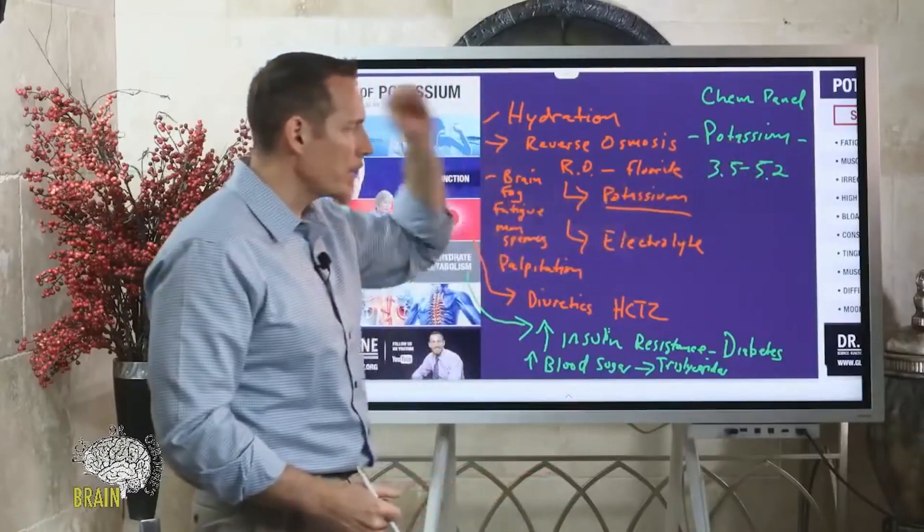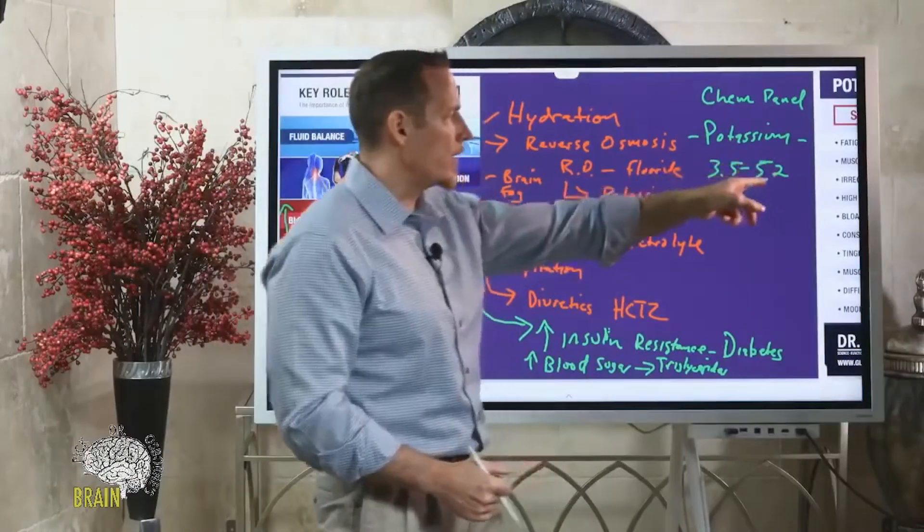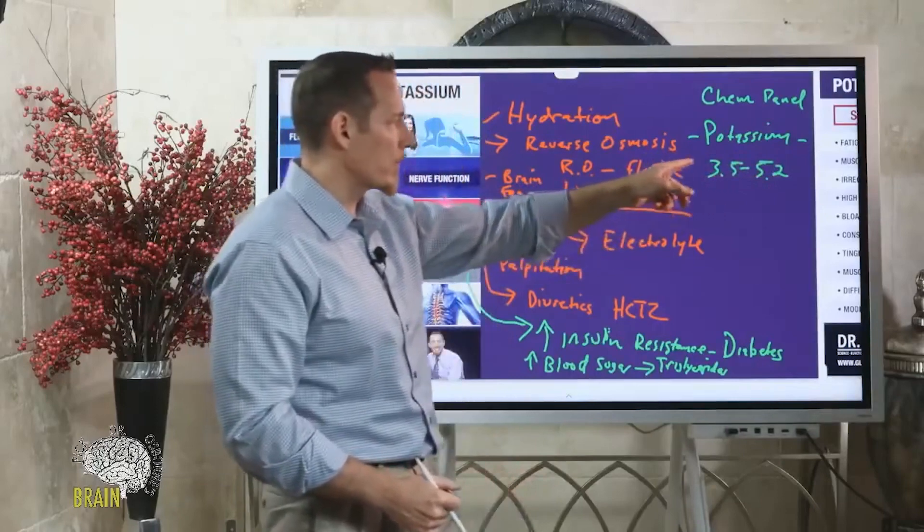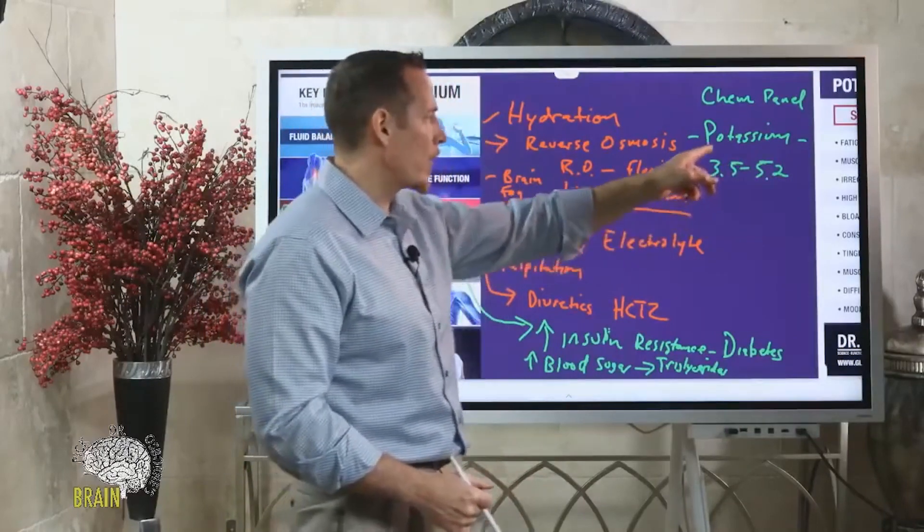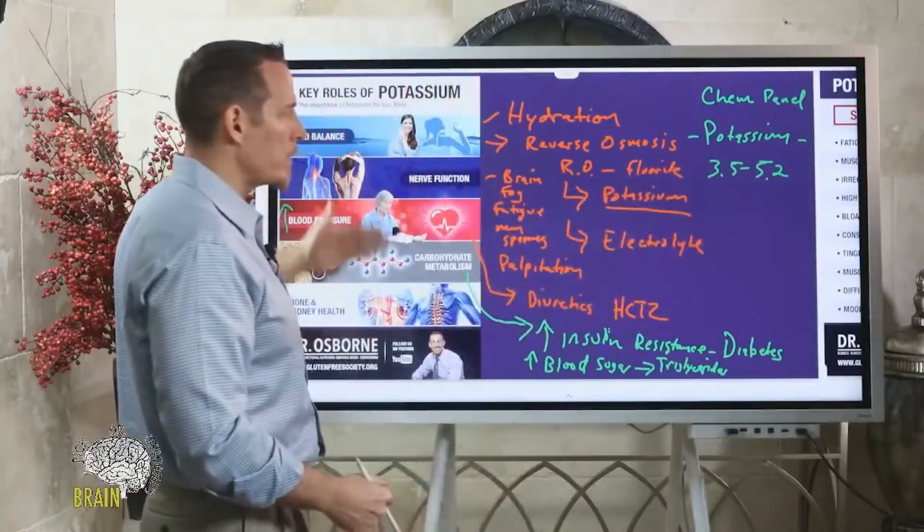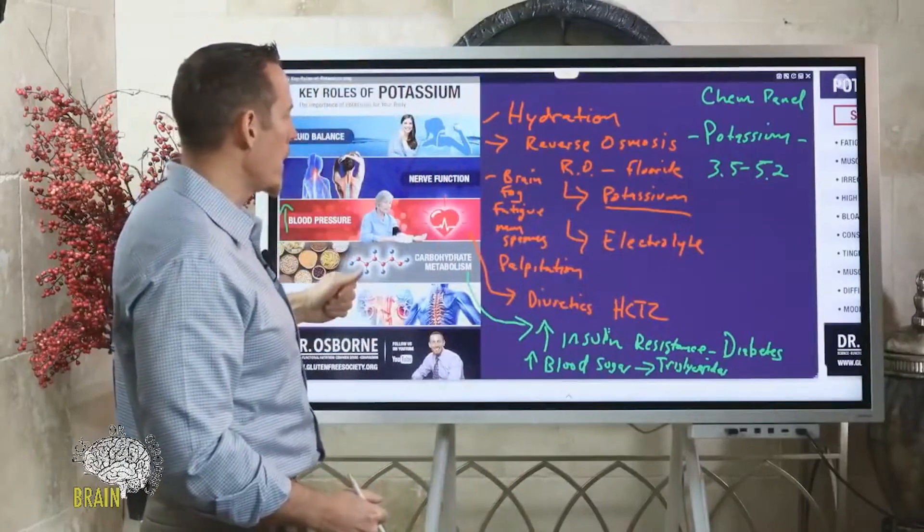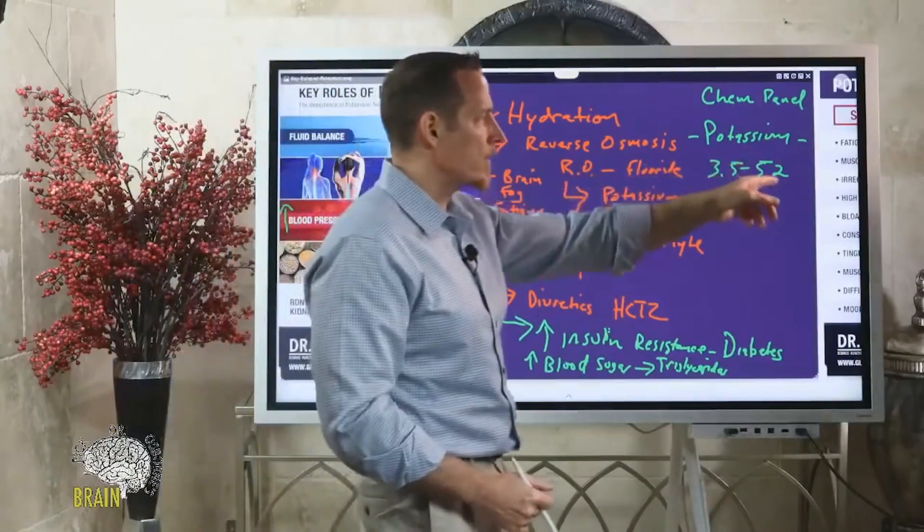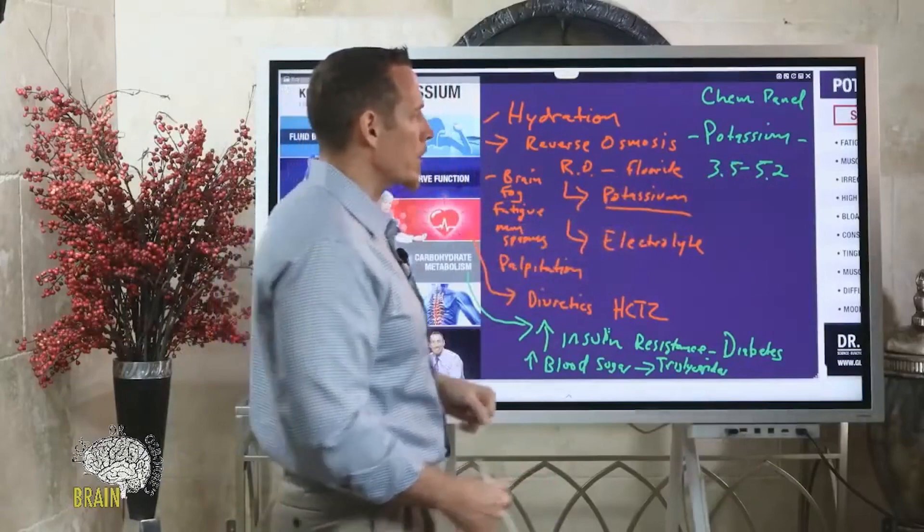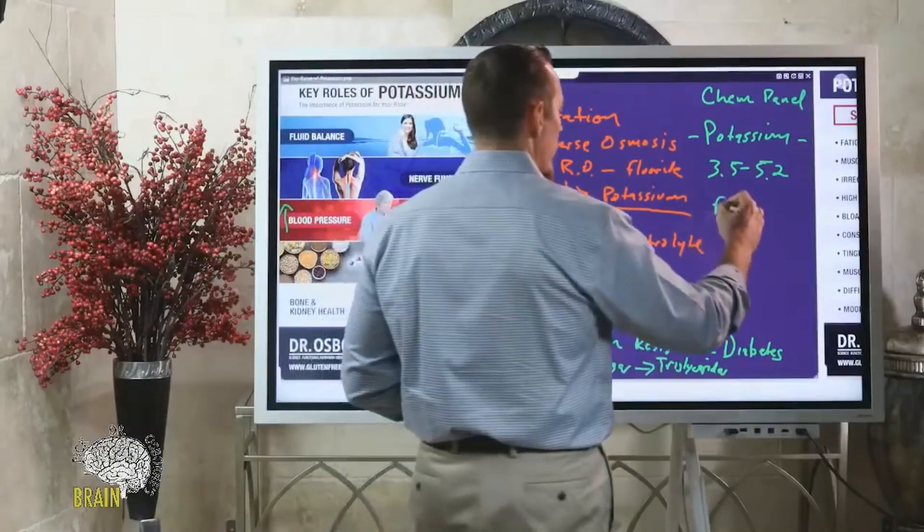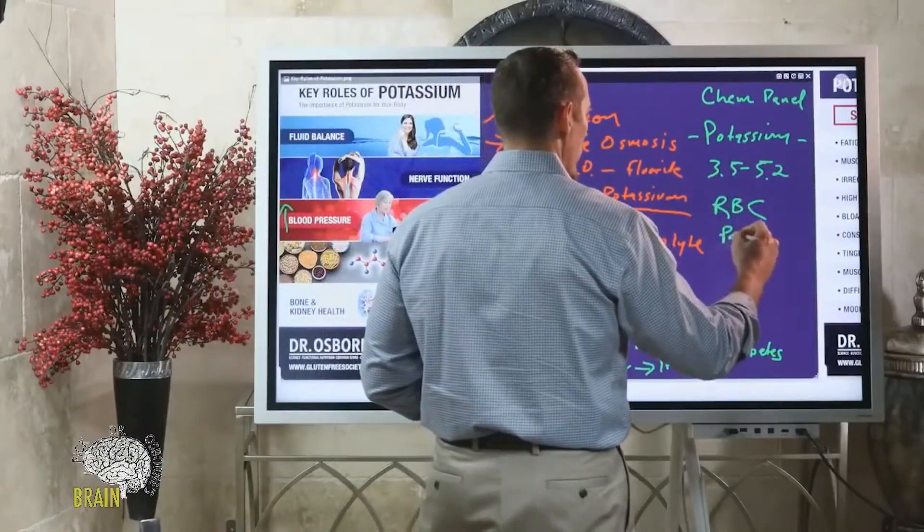Depending on which lab, the range is anywhere from 3.5 to about 5.2, 5.3, somewhere in that neighborhood. This is your serum or blood potassium level. The best way to look at potassium though is not this. If this is skewed, you've got problems. If this is really low, you've got problems, and these things are already happening - these problems over here are already occurring.